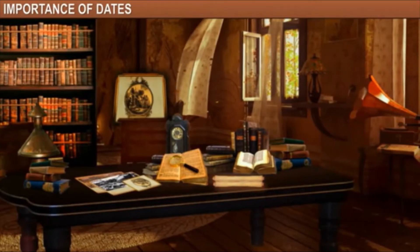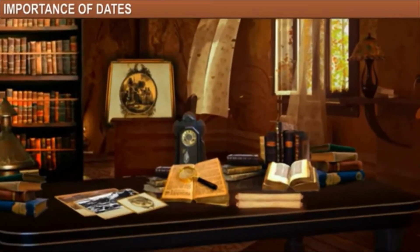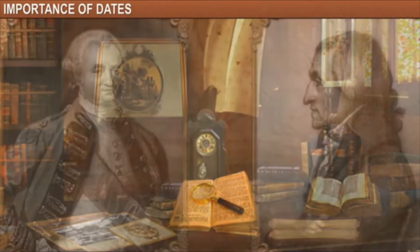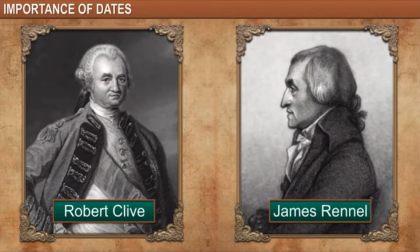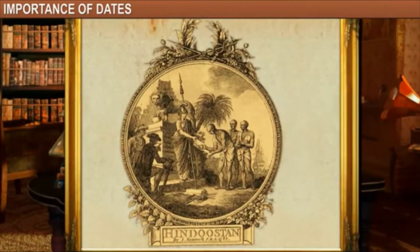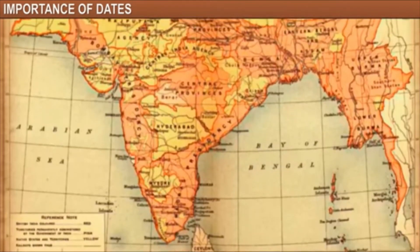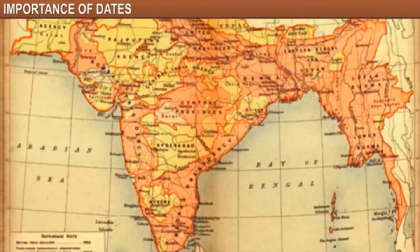History is a subjective study of events that occurred in the past. For example, in the year 1782, when Robert Clive asked James Rennell to create paintings on India, he drew a picture which suggests that the Indians willingly handed over their ancient texts to the British and requested them to protect Indian culture.